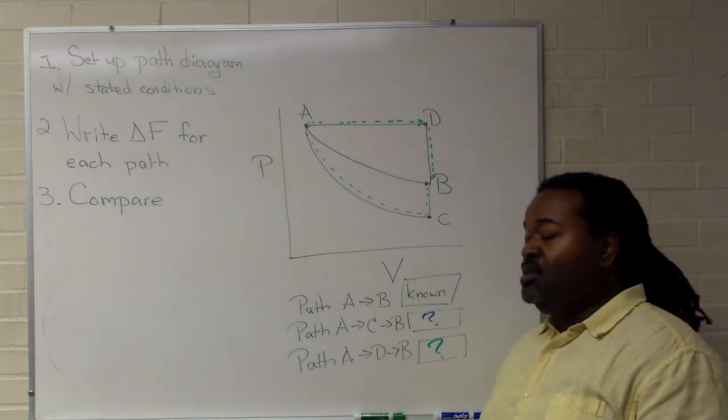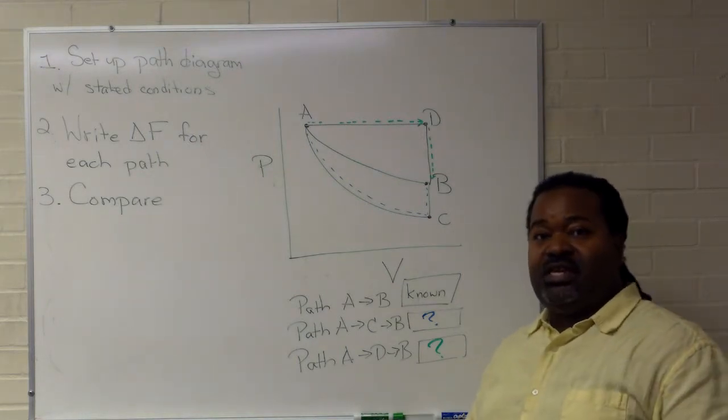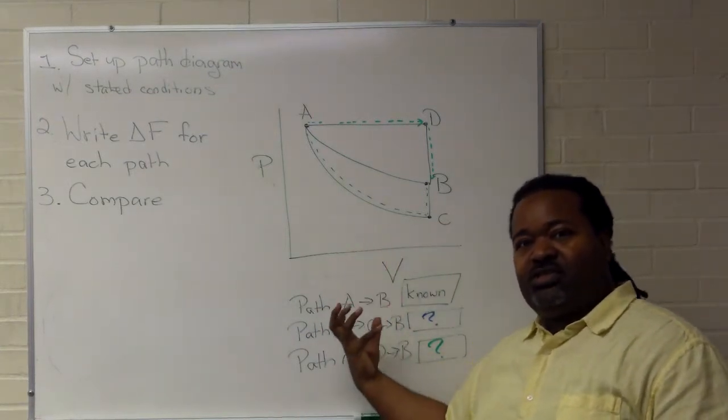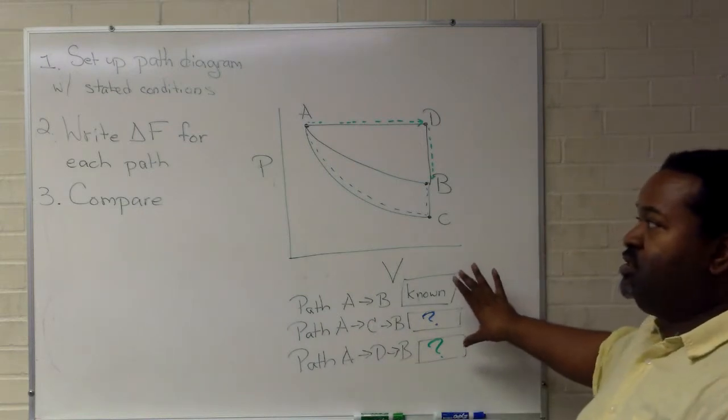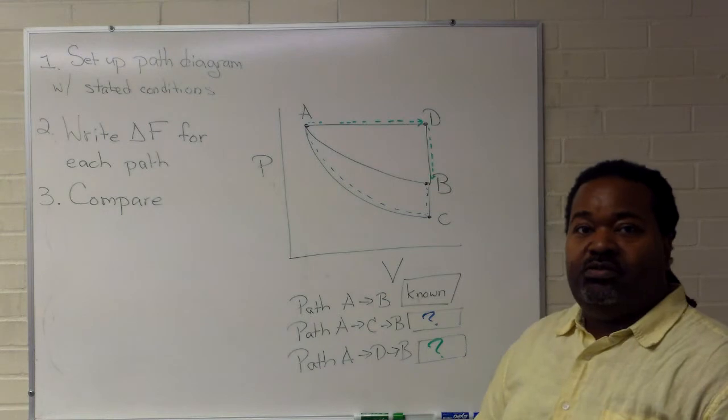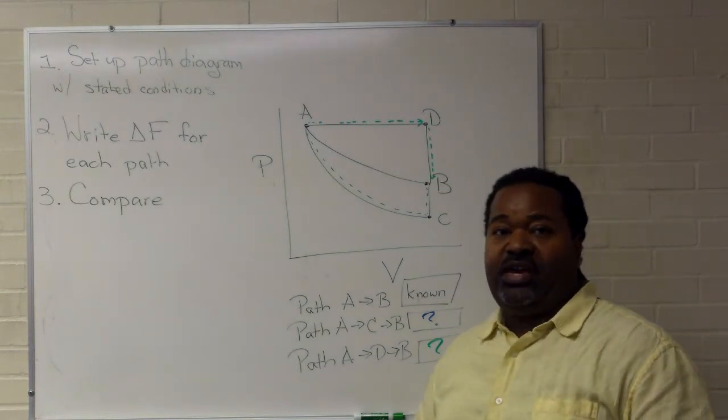Path independence is a central feature of state functions. So having this properly labeled, carefully described, and carefully considered, having that comparison turn up everything identical will give you the desired result of proving that something is in fact a state function.